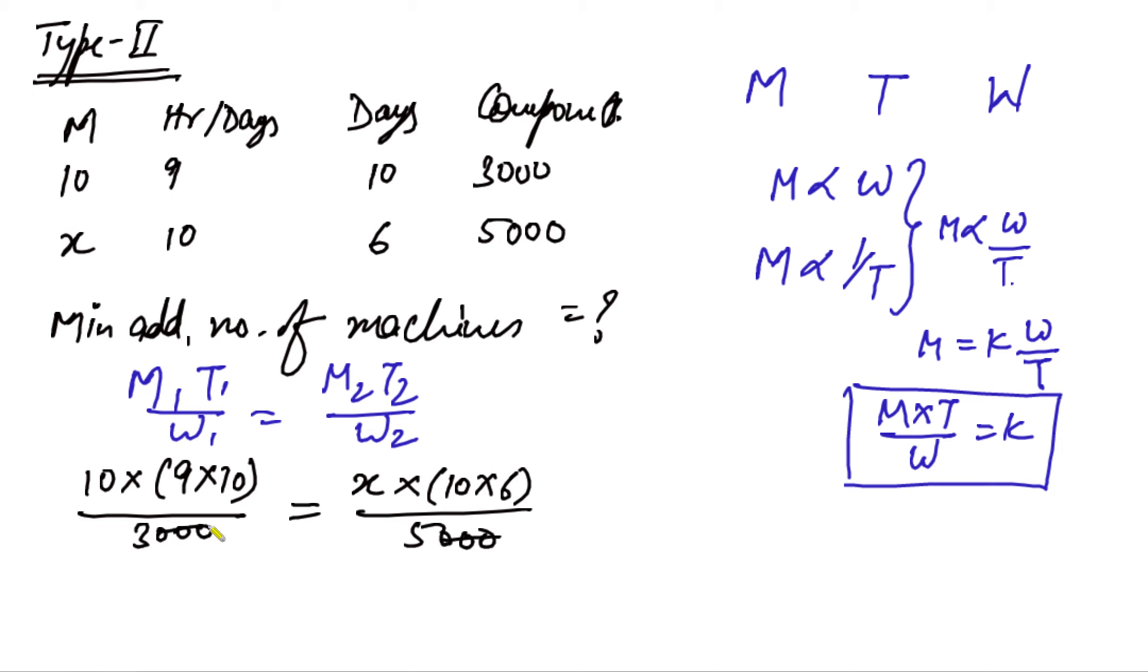Now we simplify this. After simplifying, we get X is equal to 25, which means the minimum number of additional machines needed to finish the work will be 25 minus 10 (which was the number of machines we already have). So we need 15 additional machines, and here we get the answer.